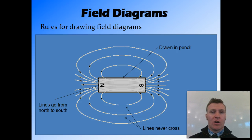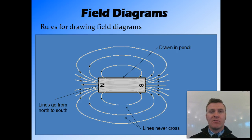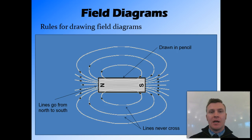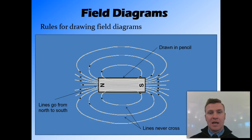The lines have arrows on them that go from the north to the south pole of the magnet. That's because the lines signify where a north pole of a magnet, if you placed it at any point on the page, would be pushed. So we have the arrows going away from the north pole and towards the south pole.